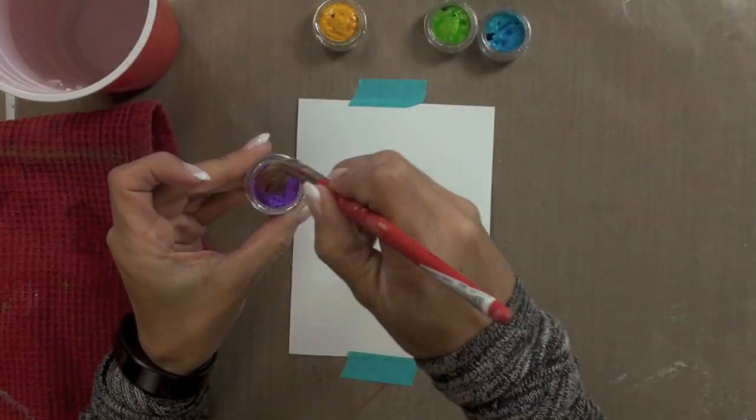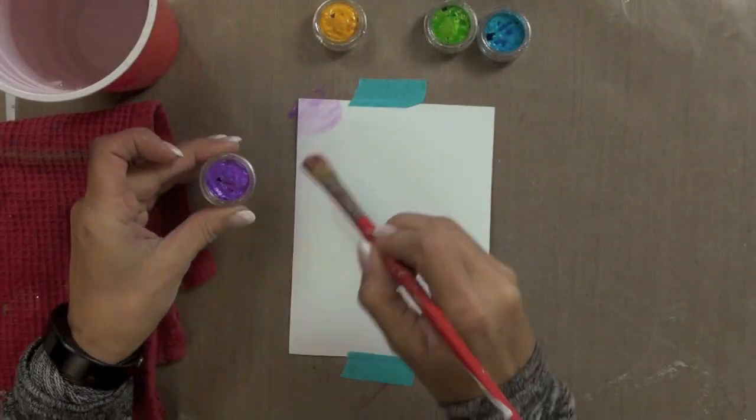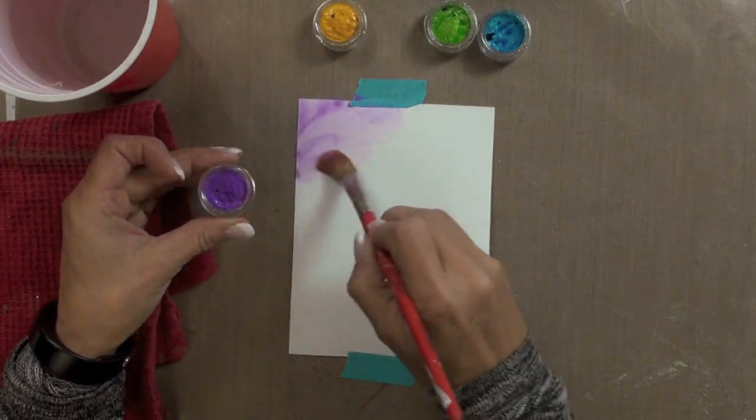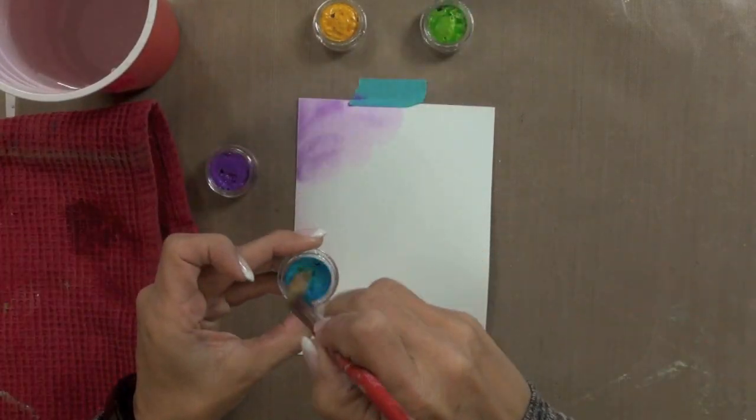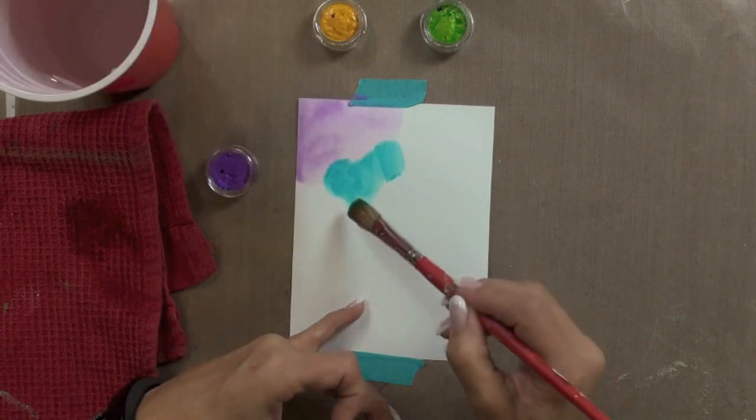So after my twinkling H2O's had sat for a few minutes I then started applying them to my surface. Now I'm working here on a Ranger Inksentials watercolor paper which I cut to four and three eighths by five and five eighths of an inch.